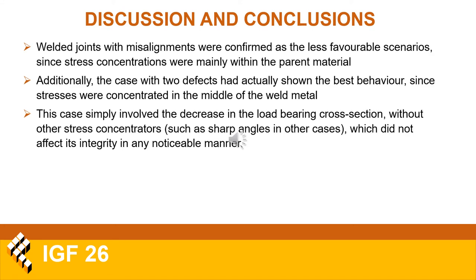Considering the individual models, two welded joint models with misalignments were confirmed as the less favorable scenarios, since their stress concentrations were mainly located in the parent material, the weaker of the two. In addition, the case with two defects showed the best behavior despite having the highest stress values, since these were concentrated in the much stronger weld metal and did not undergo plastic strain. This case involved only a decrease in load bearing cross section due to incomplete root penetration, with no other significant stress concentrators such as sharp angles from undercuts or the added influence of misalignments.